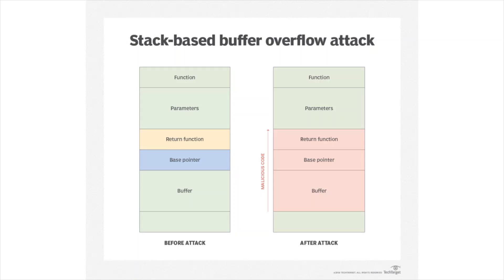In this case we will just have a buffer as our local variable. From this diagram we can see that the memory layout of the buffer, the base pointer, and the return address are side by side. So if we happen to overflow the buffer right outside its bounds, we can overwrite the base pointer and also override the return address.